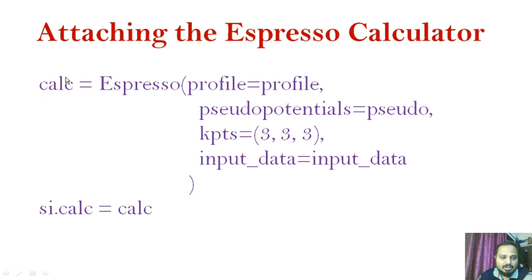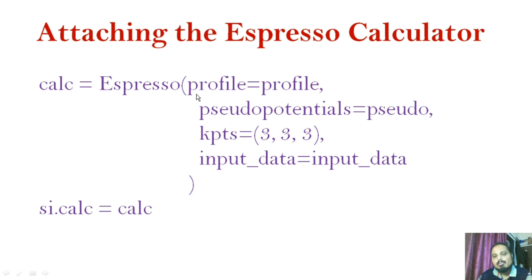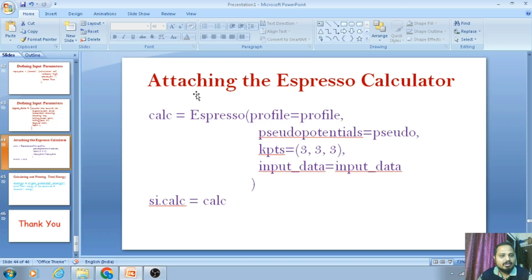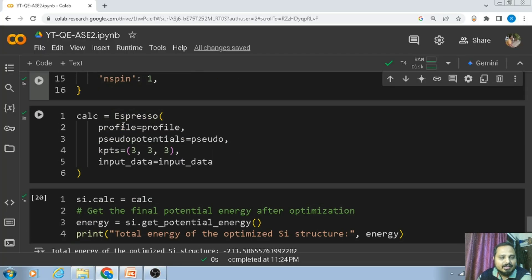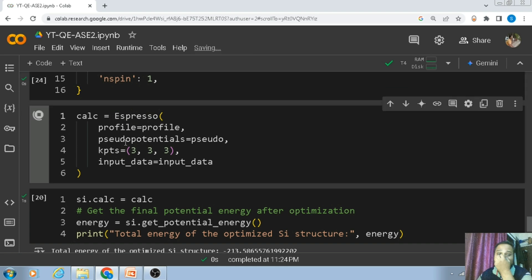I have attached all the parameters used for the calculation in Quantum ESPRESSO to the 'calc' variable. Then I attach this calc variable to my crystal structure by writing 'si.calc = calc'. This is how you attach any calculator to your structure — the same approach applies if you are using VASP, where you would specify all parameters in VASP format.